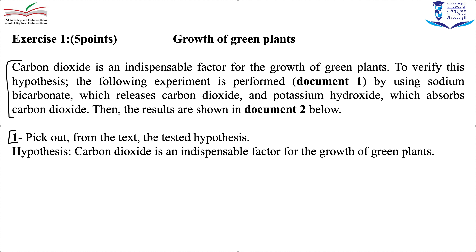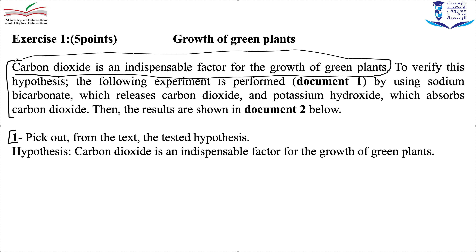Question 1: Pick out from the text the tested hypothesis. The answer is: 'Carbon dioxide is an indispensable factor for the growth of green plants.' Note that this hypothesis is placed before the experiment description in the text — it is important to read and understand everything carefully.